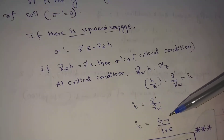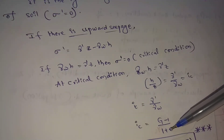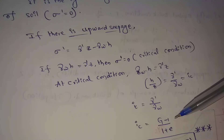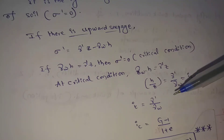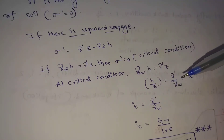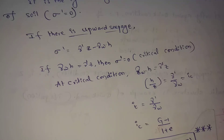Next one: Ic equals G minus 1 by 1 plus e. Here G means specific gravity of the soil and e means void ratio of the soil.